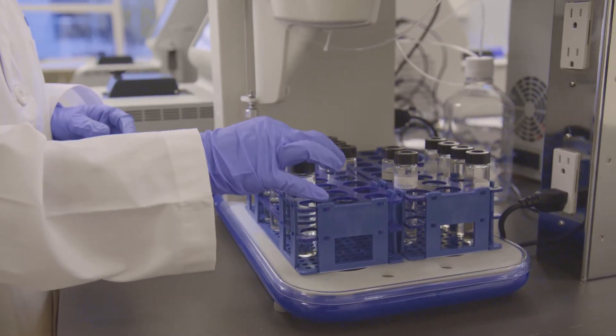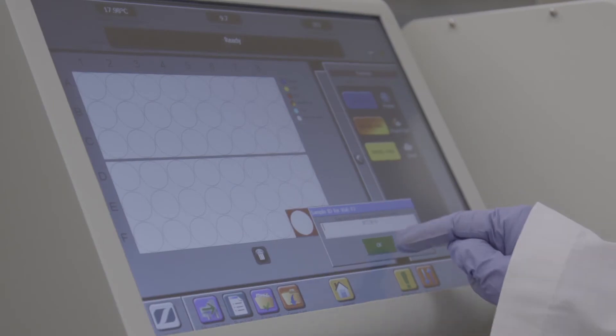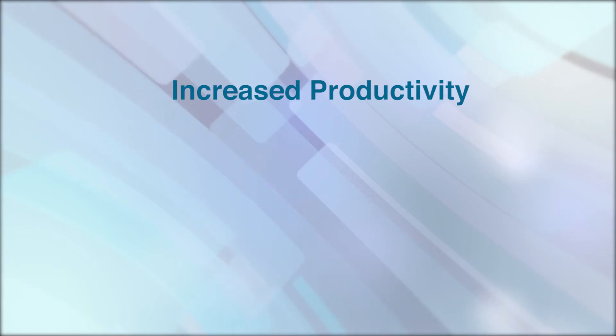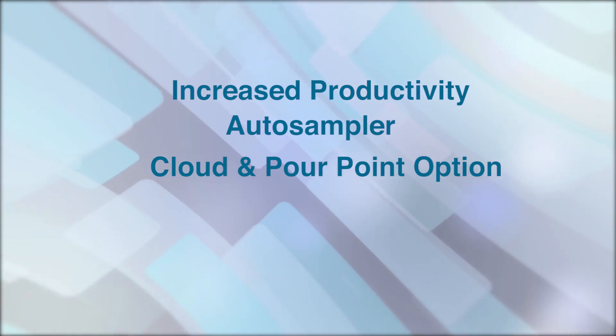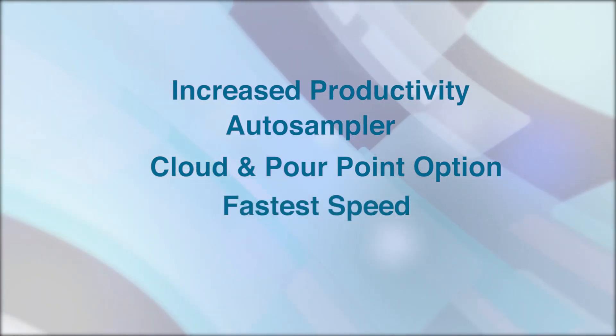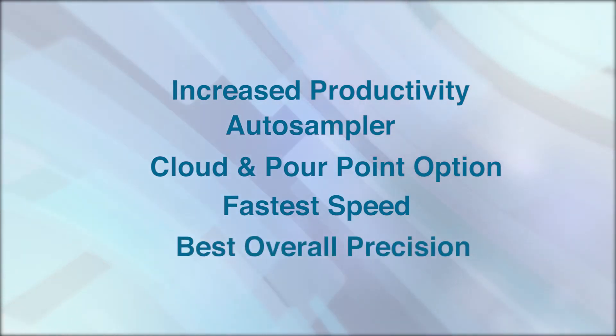Thanks to its time-saving and productivity-boosting features, the JFA 70XI can increase your lab's throughput further with a 48-place auto sampler. It even has cloud and pour point options for diesel fuels, providing the fastest speed of any automatic or manual method, and boasting the best overall precision of any automatic or manual ASTM method.